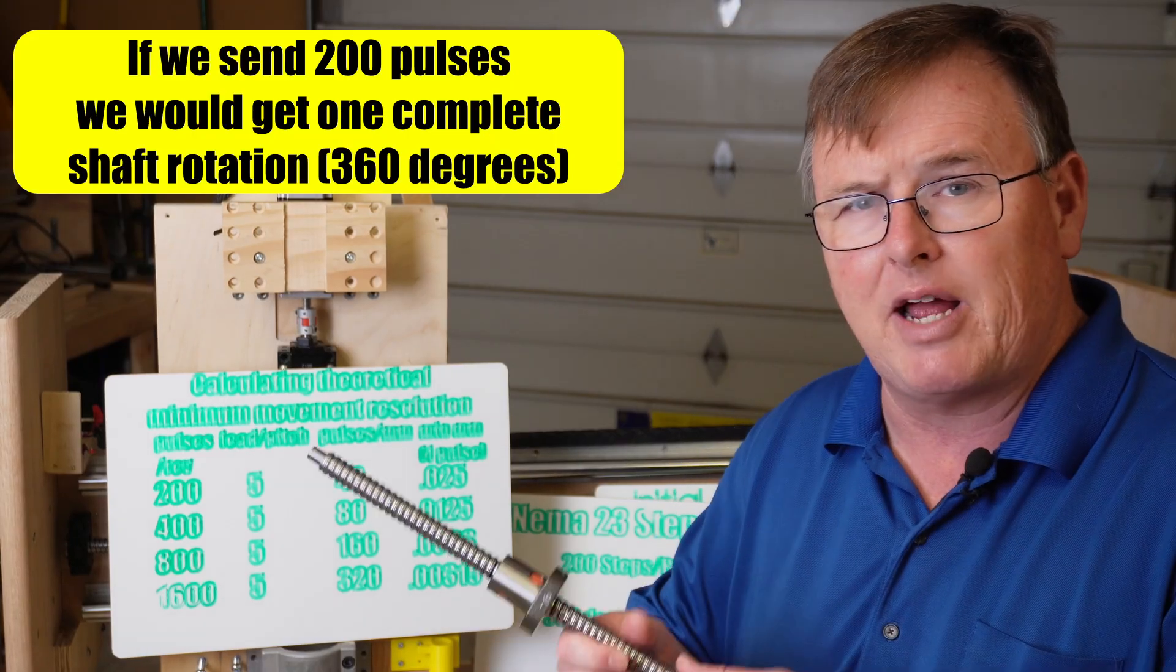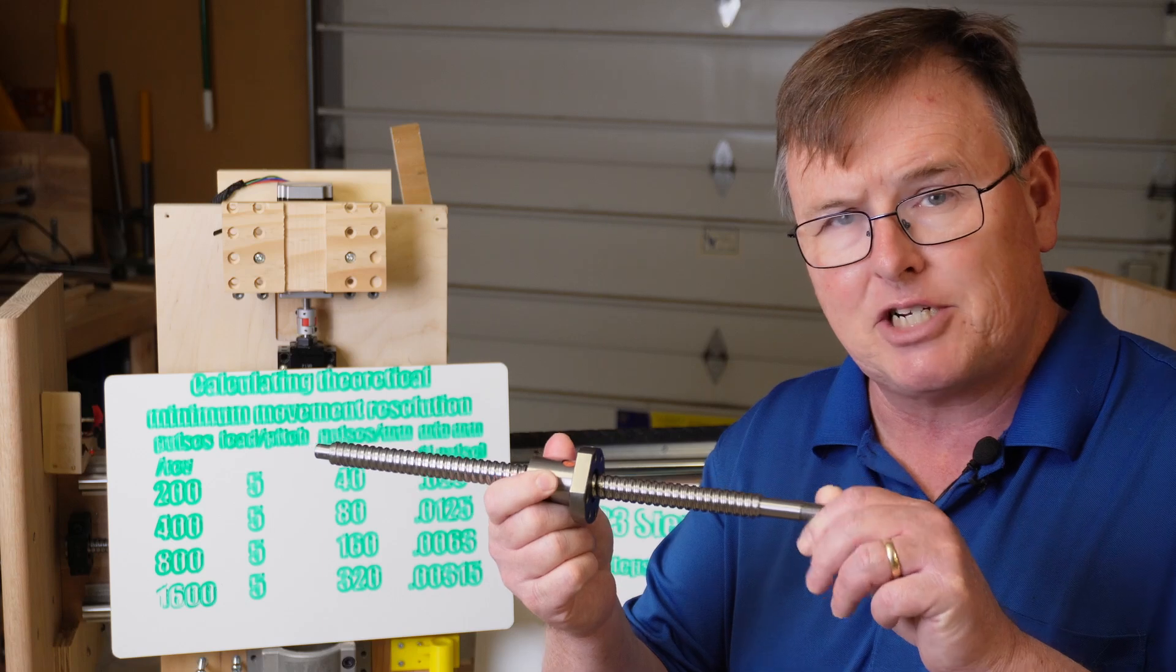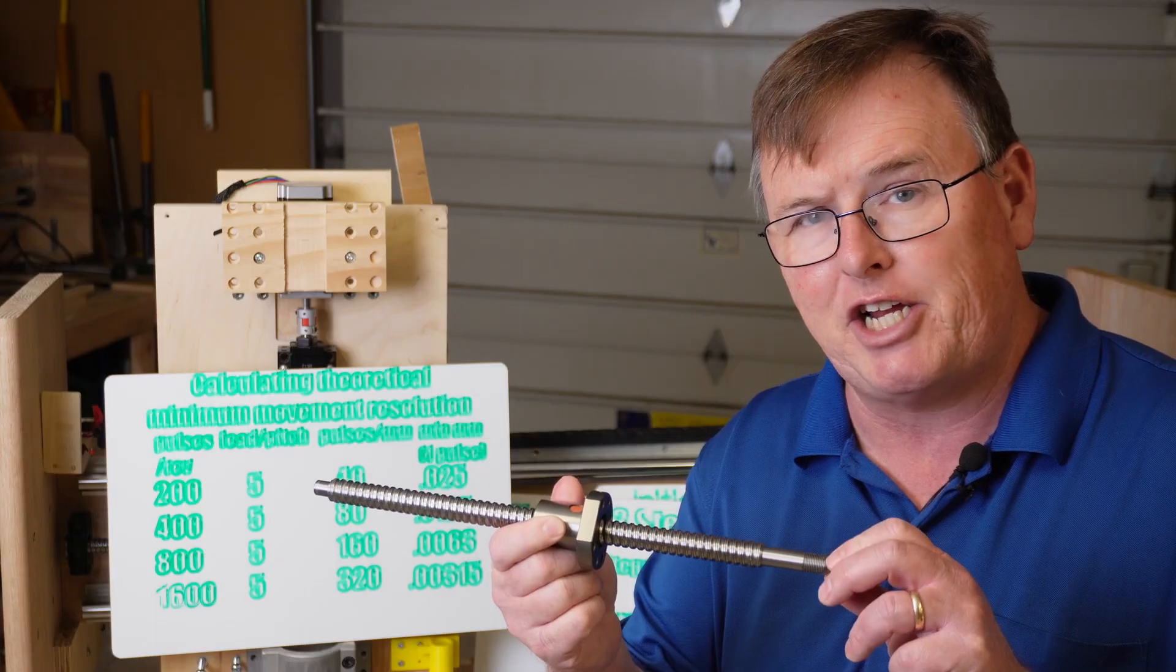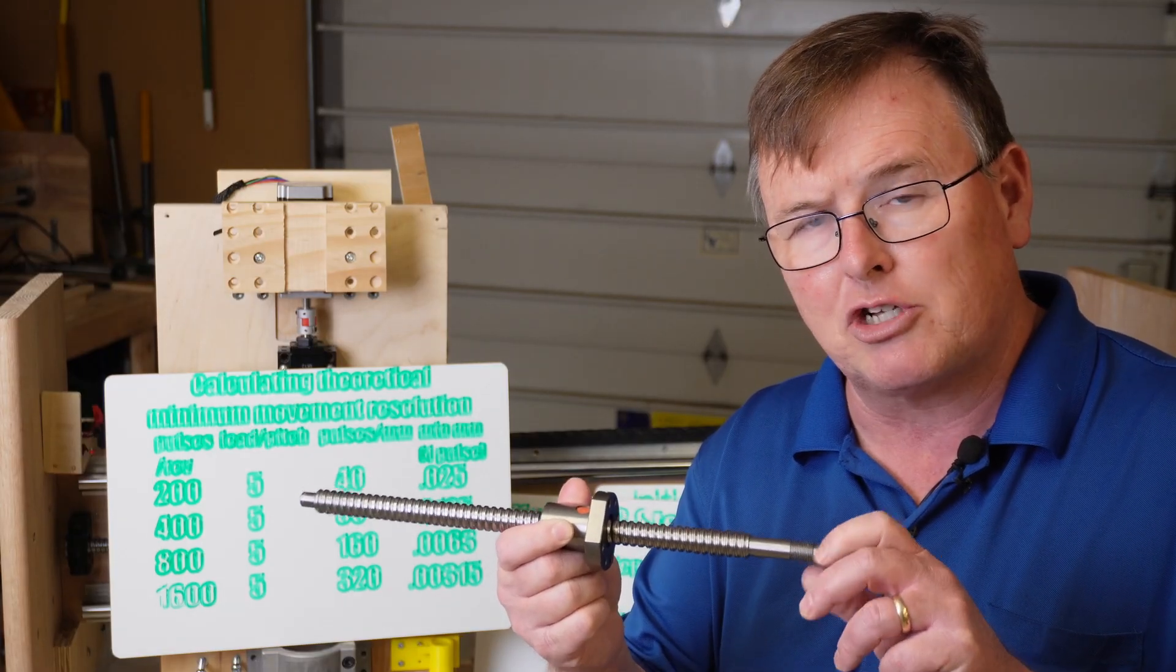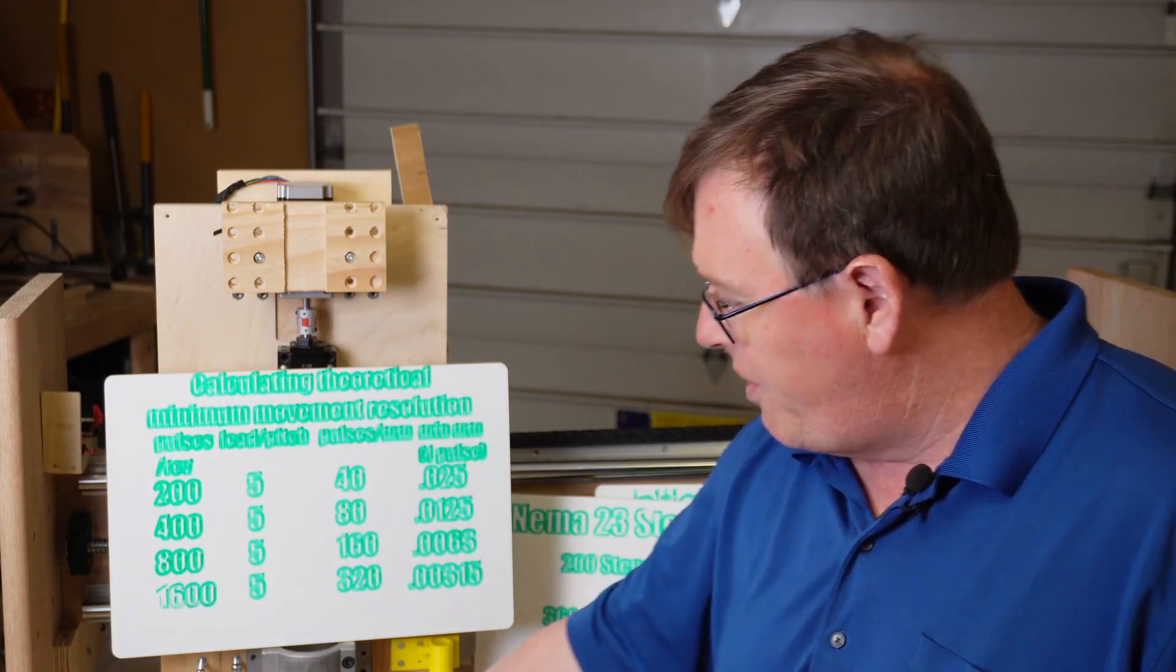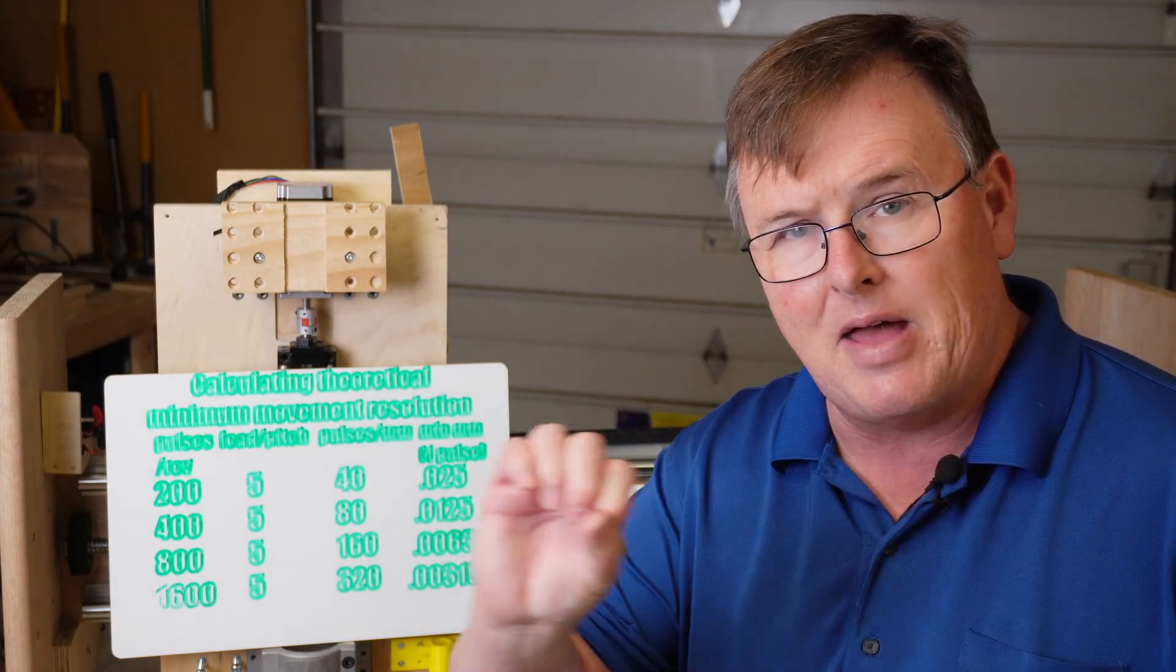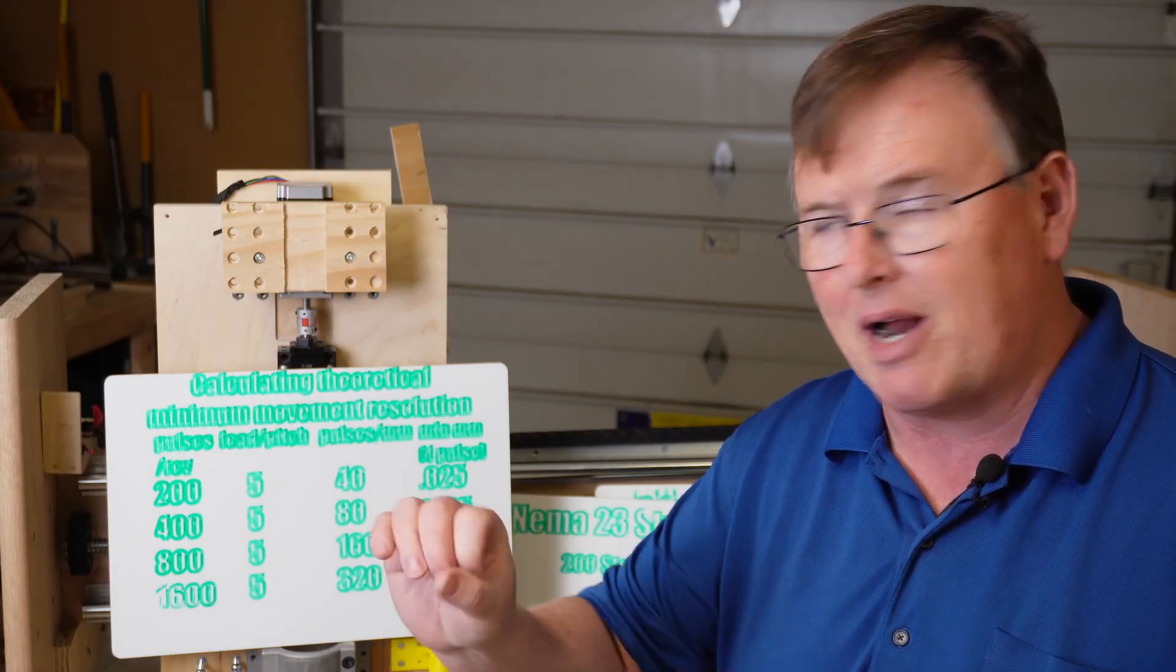Then the next thing that comes into play is the ball screw or lead screw that we have. Pitch and lead for single threaded screws are the same. You can usually find these on your manufacturer's data sheet or you can physically measure it by twisting your ball screw and seeing how much the ball nut housing moves along the way. This particular one that I have has a lead or pitch of 5. That means that if I do one complete rotation, that housing moves 5mm linearly along the threads.